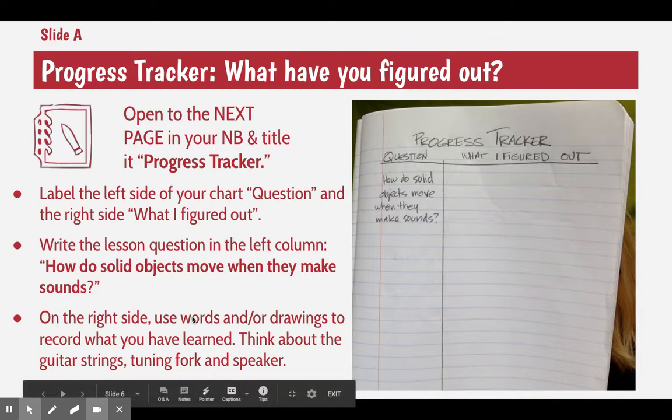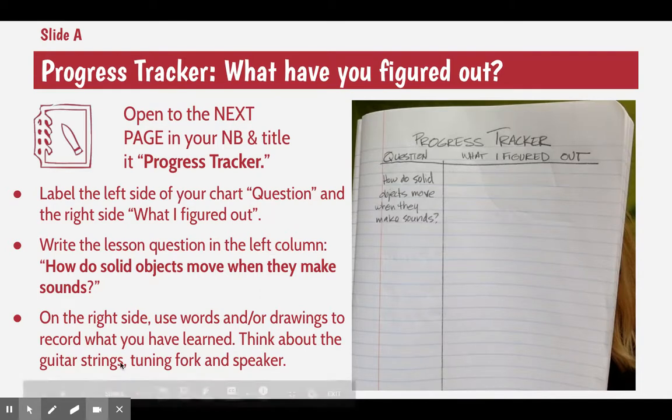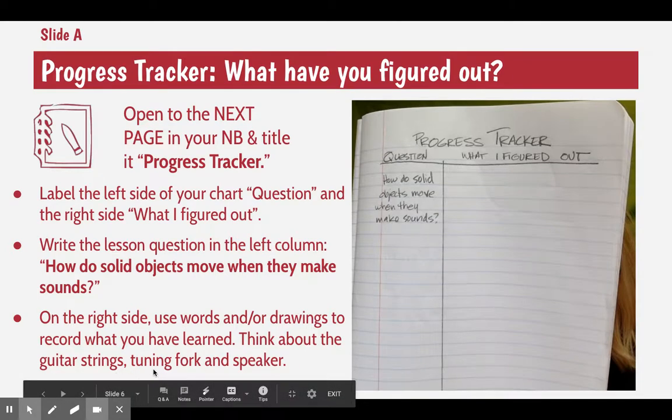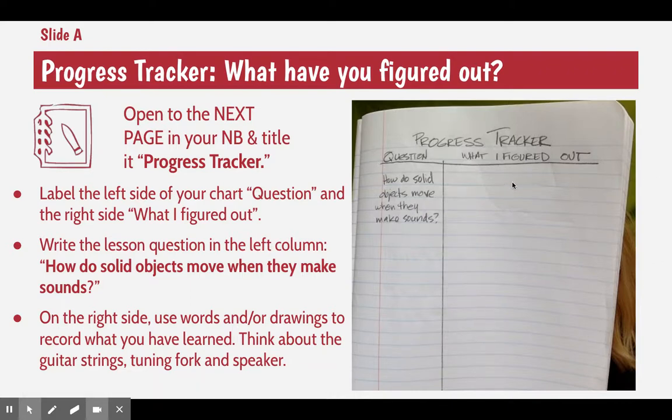It says on the right side use words and or drawings to record what you've learned. Think about the guitar strings, tuning fork, and speaker. Write in detail what you've learned. What's your evidence for how solid objects move when they make sounds? What starts the movement? Then what happens as they're moving? Use your models of the drum, the tuning fork, or guitar to explain that.